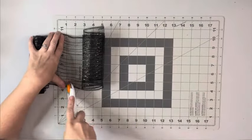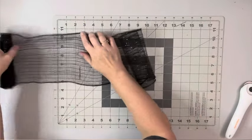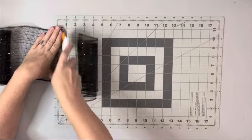I started with this black mesh from Dollar Tree. I needed two rolls of that and I needed to cut 18 strips at 20 inches.